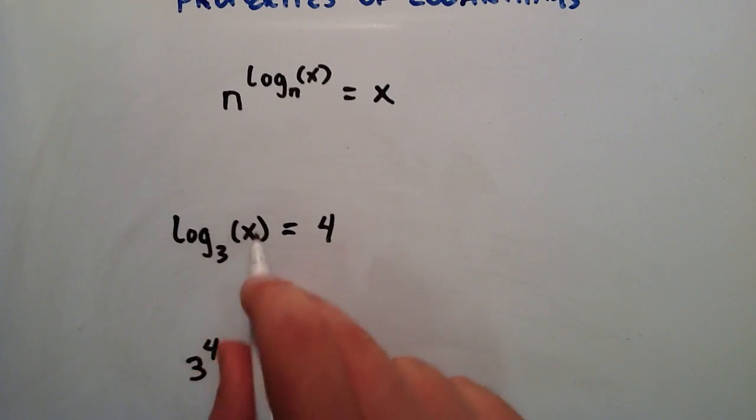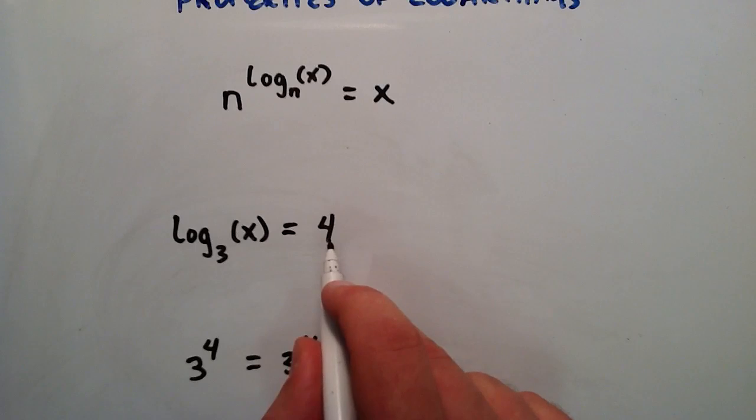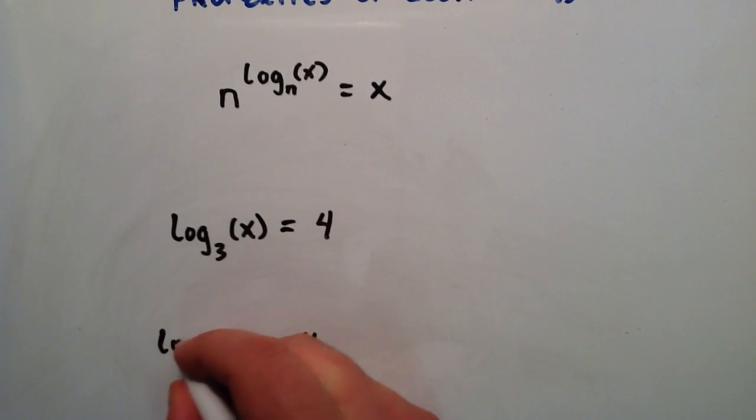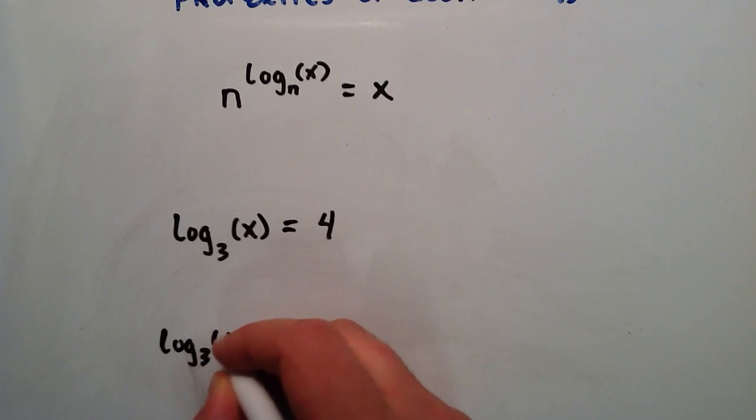And because we're implying that this whole side equals 4, we can change this 4 to be log base 3 of x.